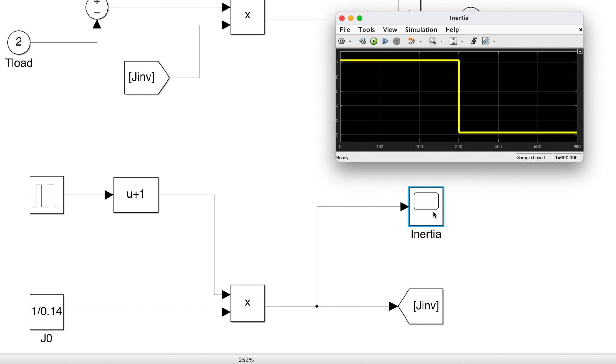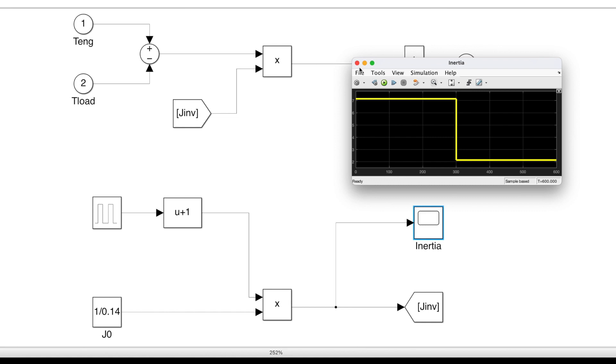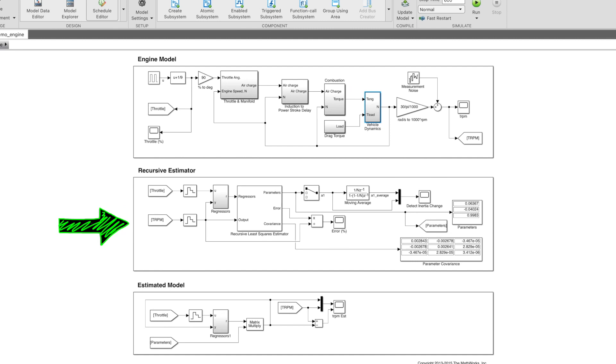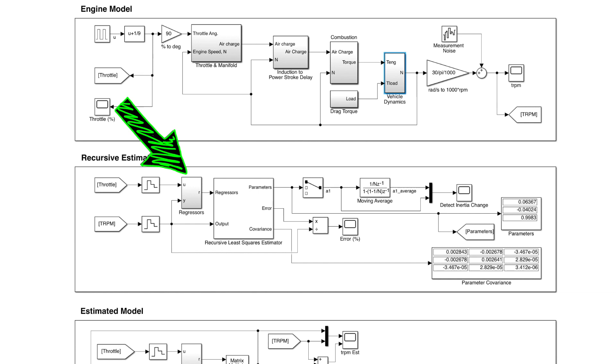This second portion is where the motor model is identified. This is done using just the throttle position and the motor speed as input, which are used to make the regression vector, which is then used to estimate the parameters of a second order polynomial model.